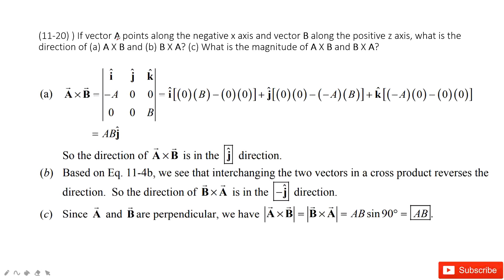A tells us it is pointing to the negative x-axis. So we have negative A. And the j component and k component are zero.